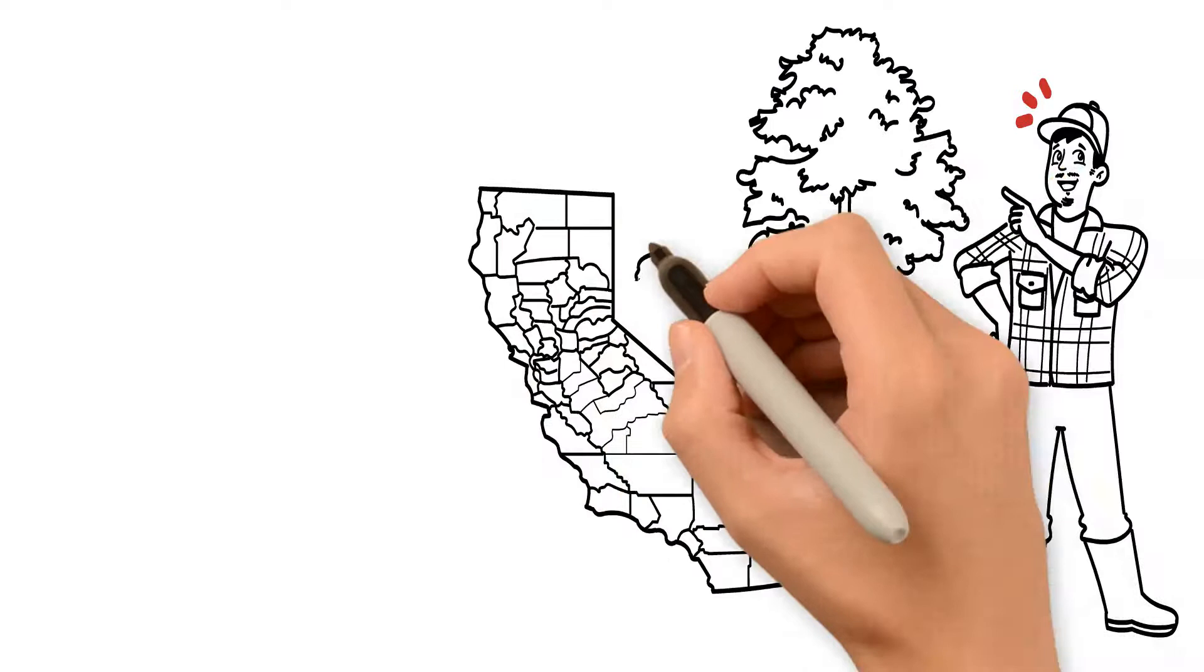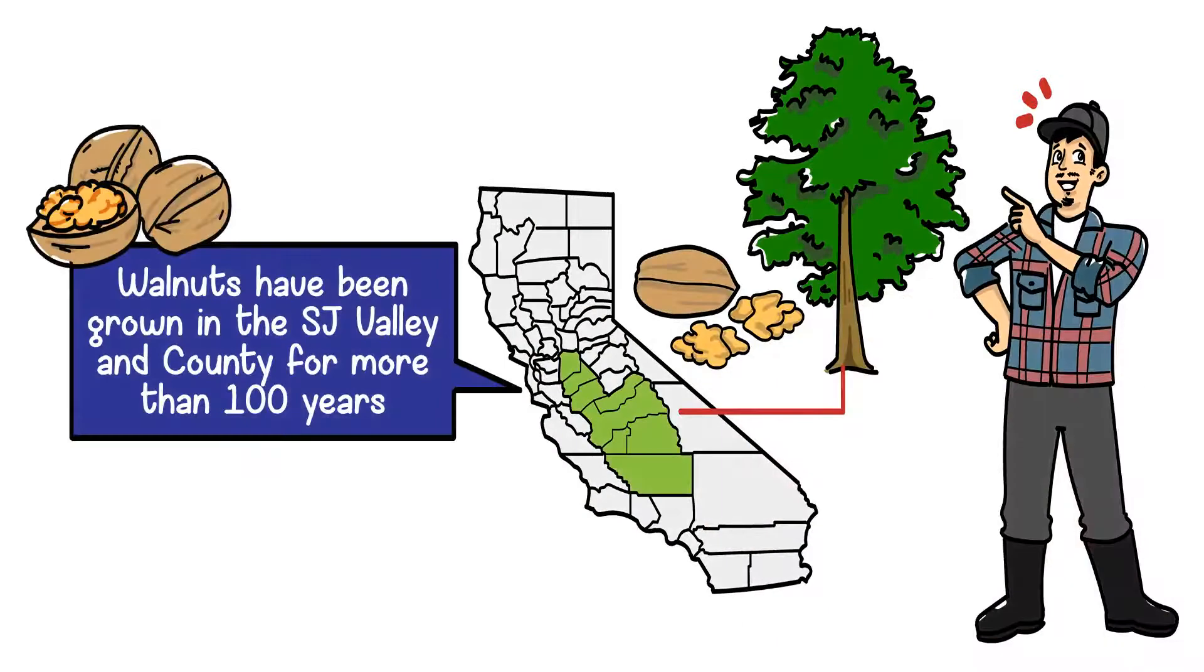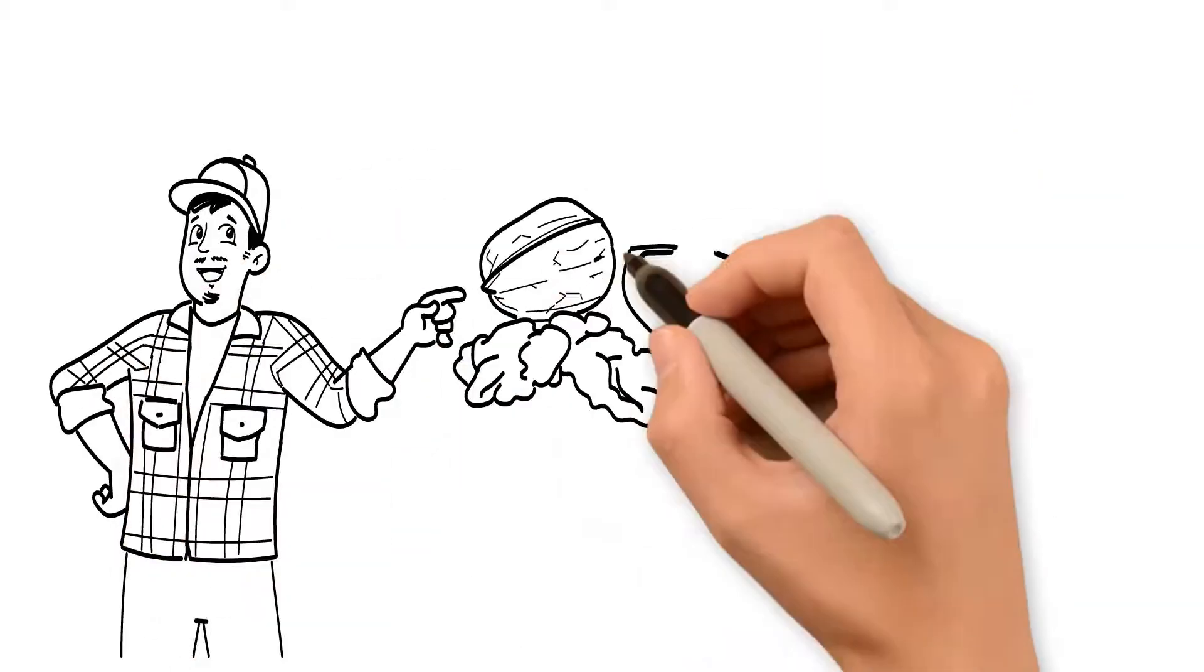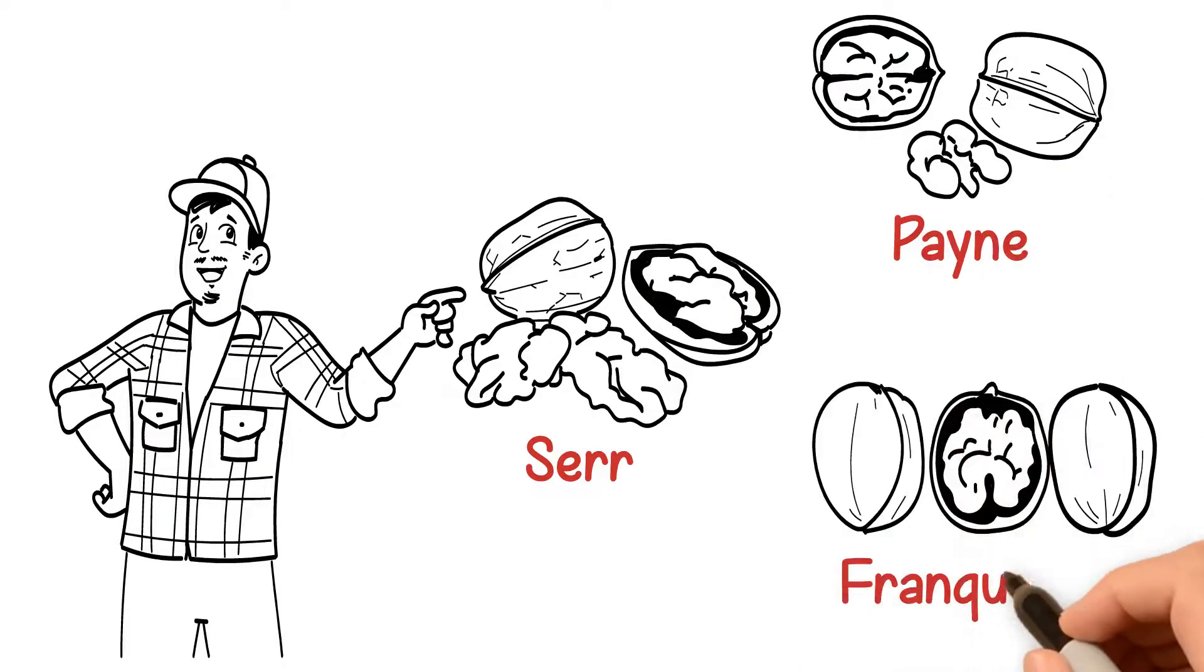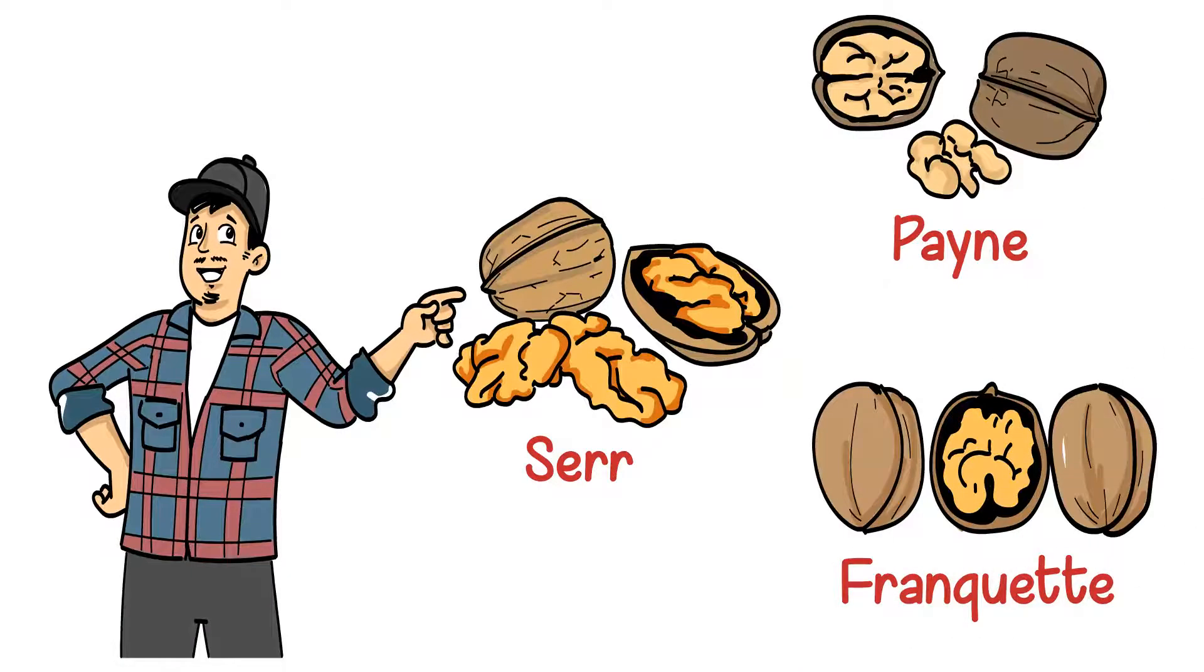Walnuts have been grown in the San Joaquin Valley and county for more than 100 years. Some of the heritage varieties, like Sur, Payne, and Franquette to name a few, are the oldest varieties.